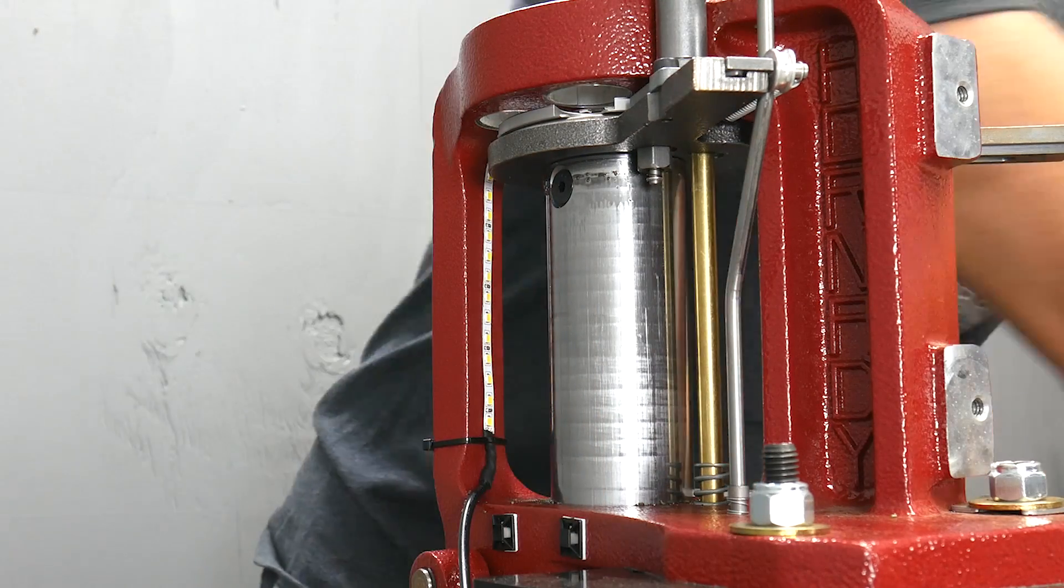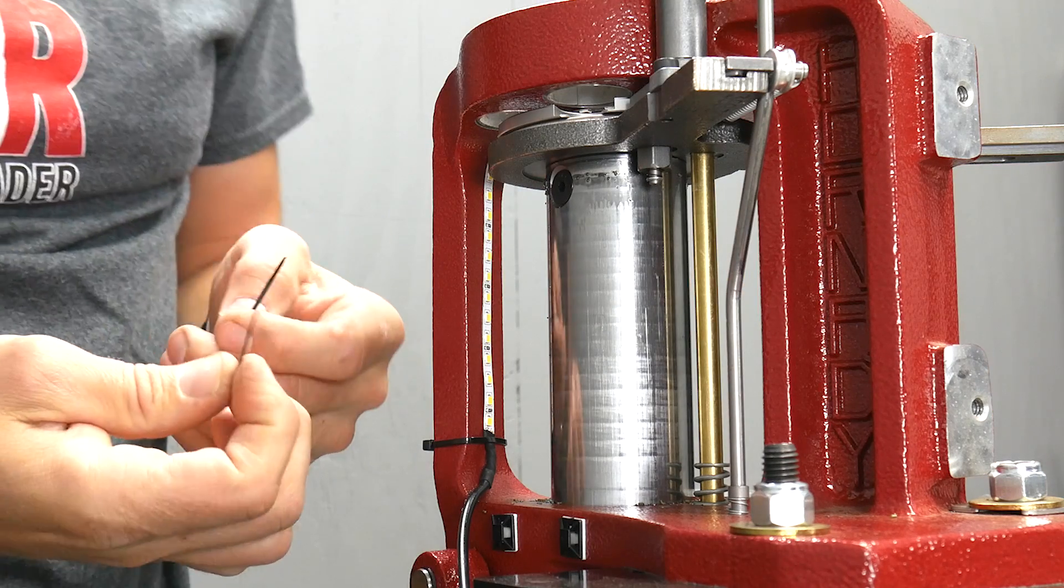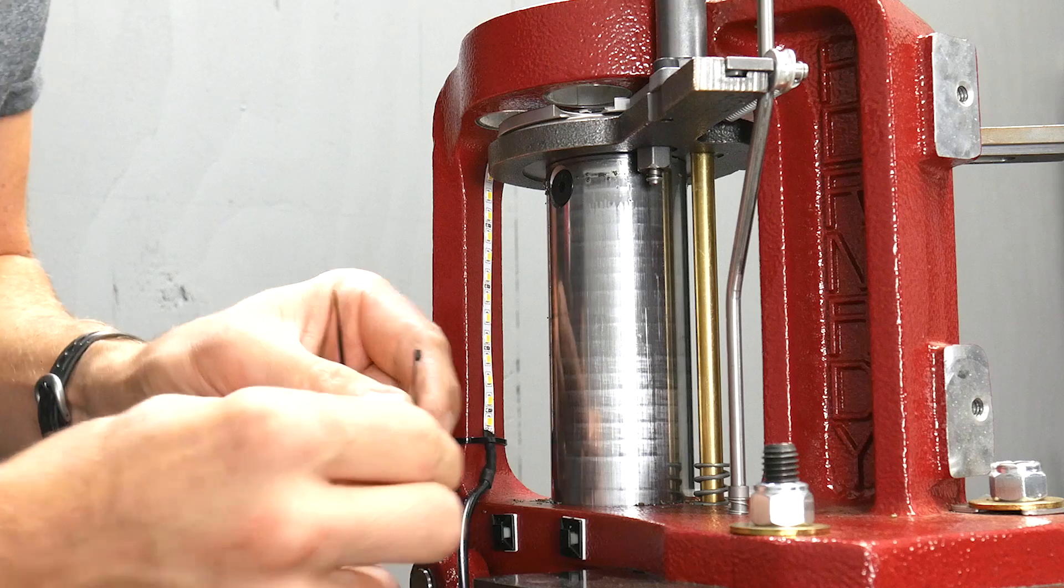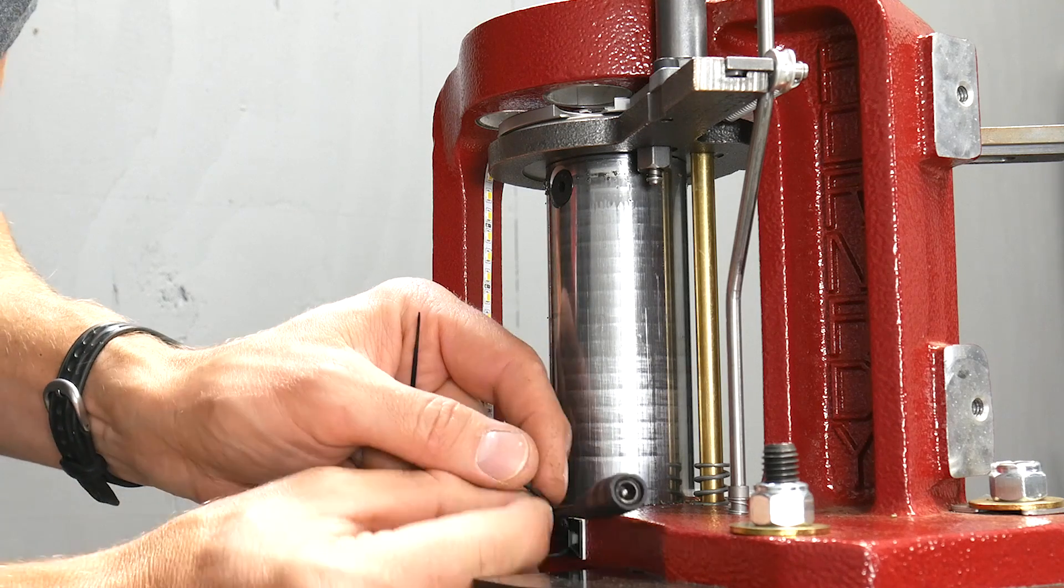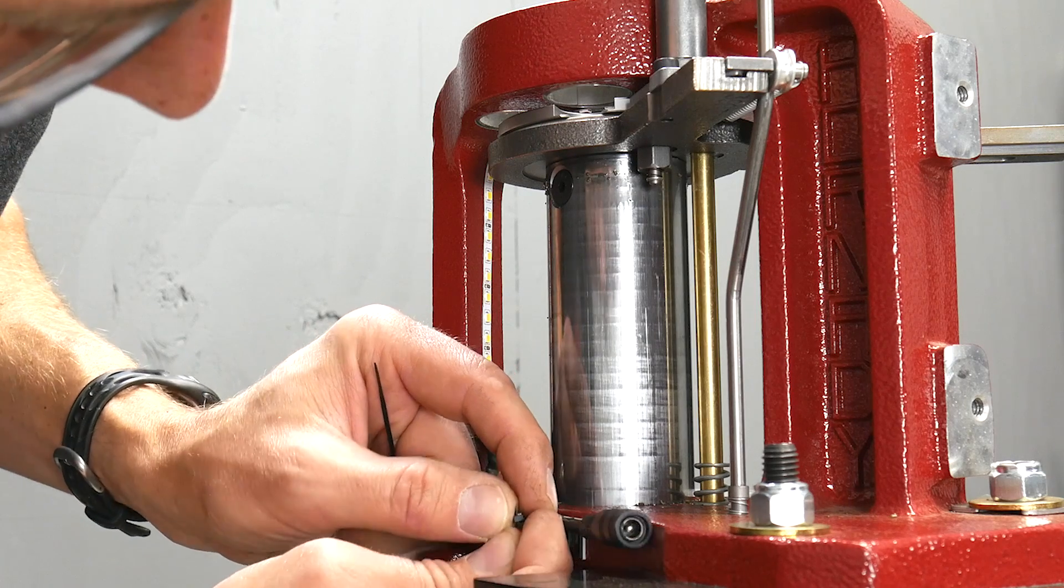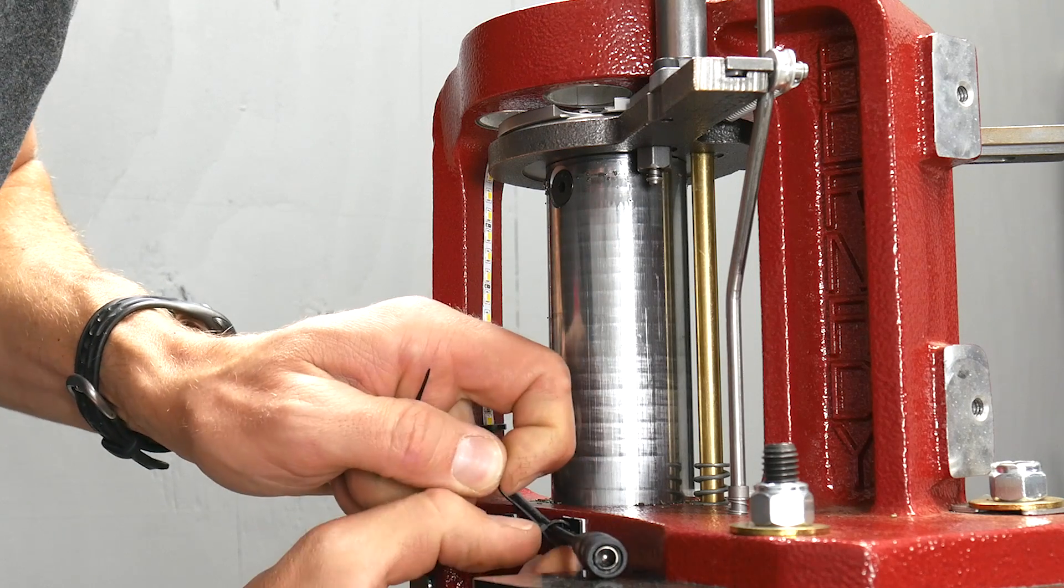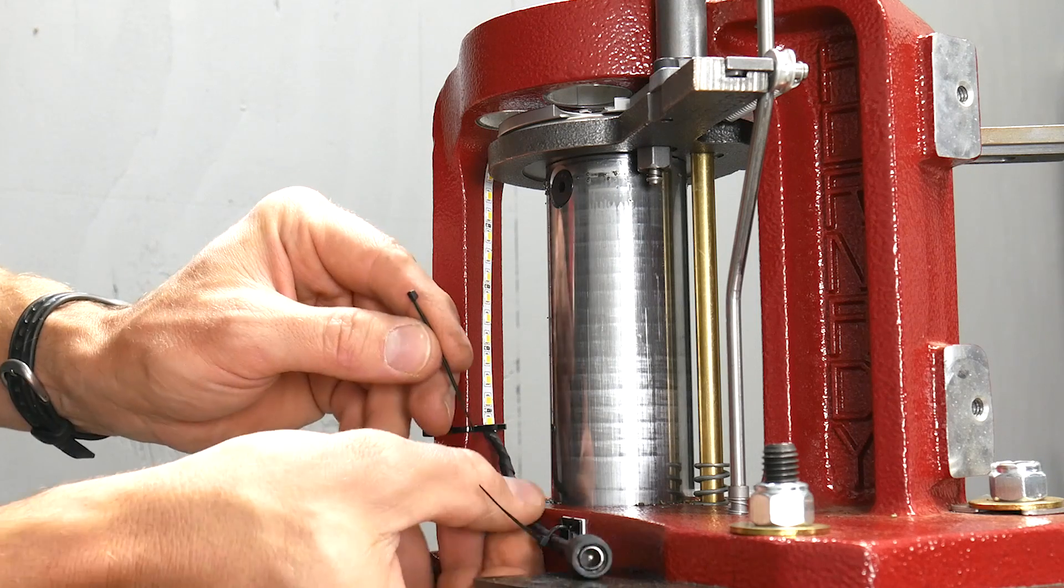Now we're going to take our small zip ties. There's two of those. And run them through the block carefully. I'm going to start with this end one loosely. And then we'll run the inboard one.